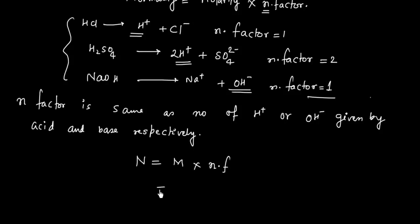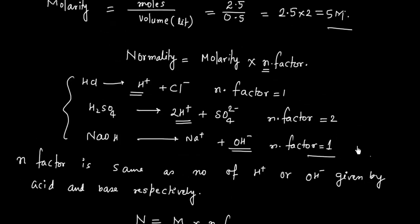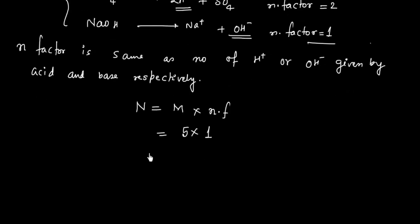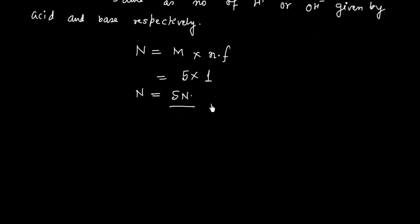Normality = molarity × n-factor = 5 × 1 = 5N. So the NaOH solution has a molarity of 5M and a normality of 5N. In this case, normality and molarity have the same numerical value.